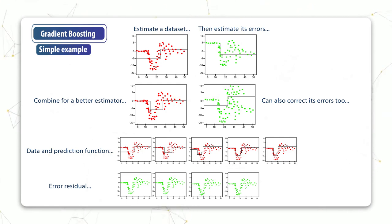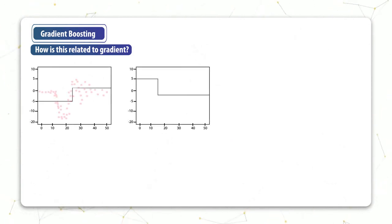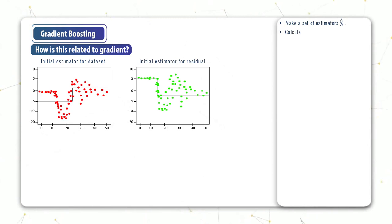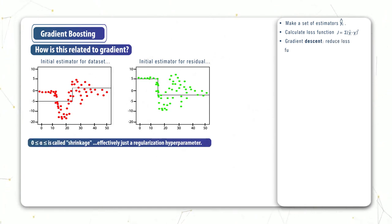And so every time we boost, the model gets more complex. Now you might be wondering why is this algorithm called gradient boosting? Well it's related to a gradient descent sort of procedure. In the case of gradient descent when we have a predictor y hat, we calculate the loss function. And then to reduce this loss function we calculate its gradient.